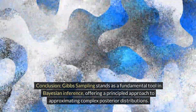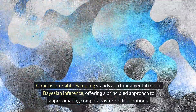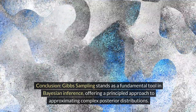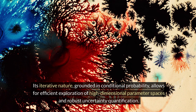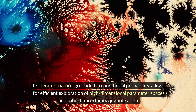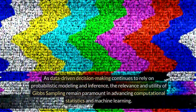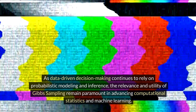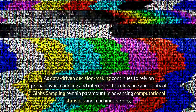Conclusion: Gibbs sampling stands as a fundamental tool in Bayesian inference, offering a principled approach to approximating complex posterior distributions. Its iterative nature, grounded in conditional probability, allows for efficient exploration of high-dimensional parameter spaces and robust uncertainty quantification. As data-driven decision-making continues to rely on probabilistic modeling and inference, the relevance and utility of Gibbs sampling remain paramount in advancing computational statistics and machine learning.